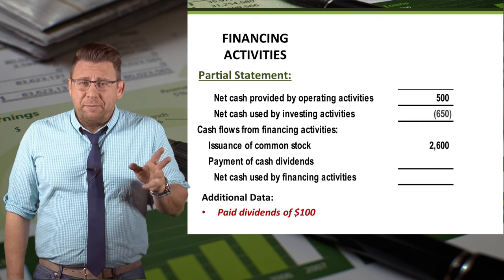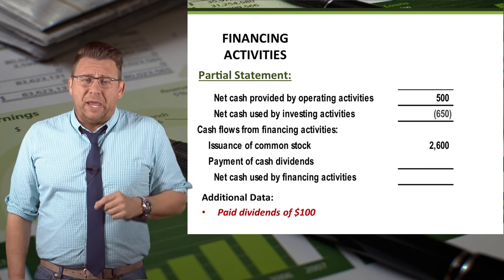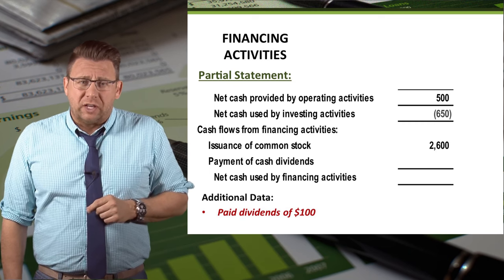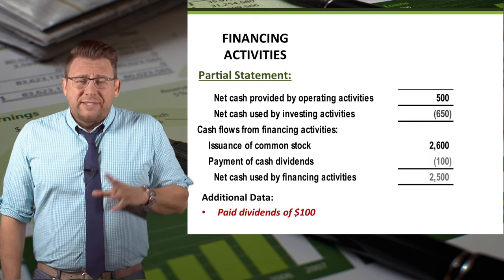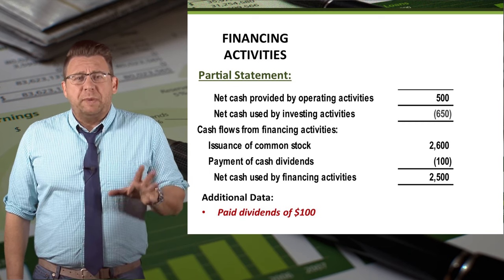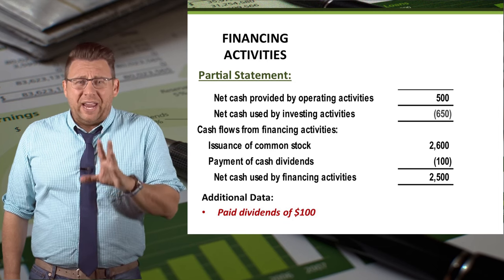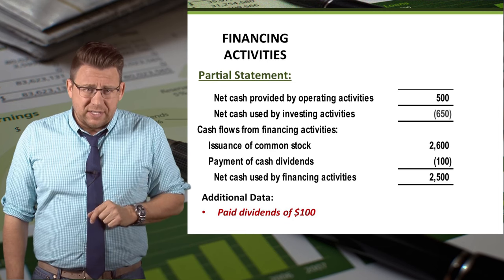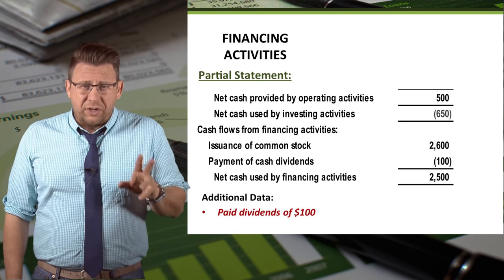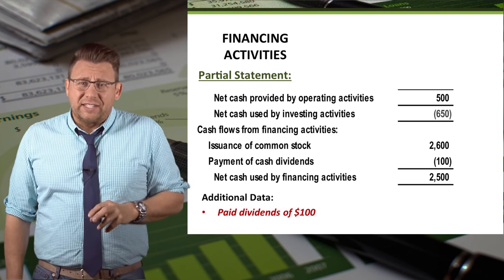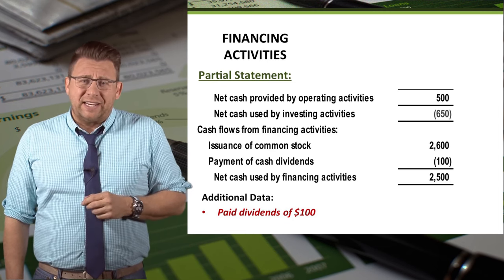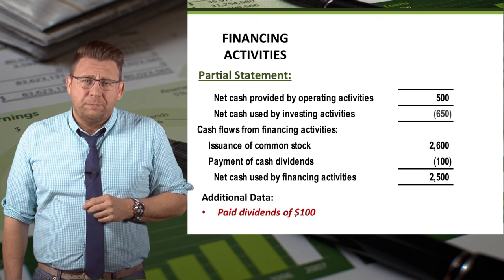The next item is a dividend payment of $100. Since cash is being paid for dividends, $100 is deducted in the financing activities section.